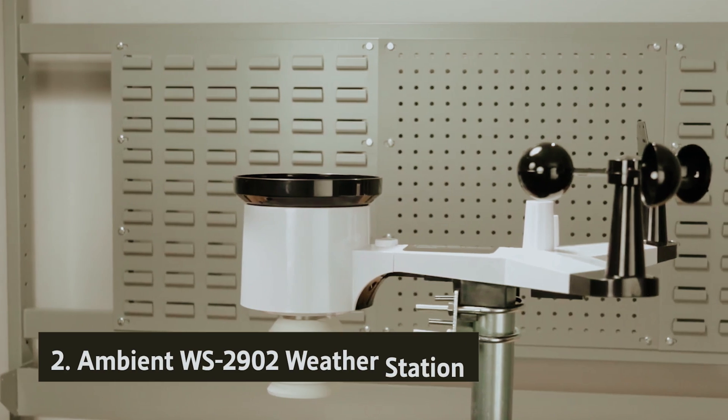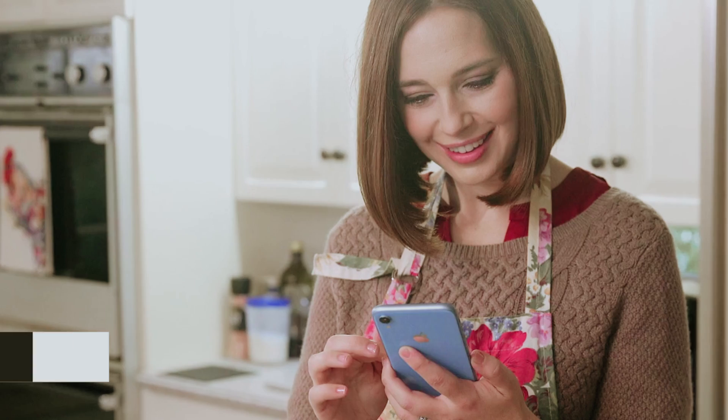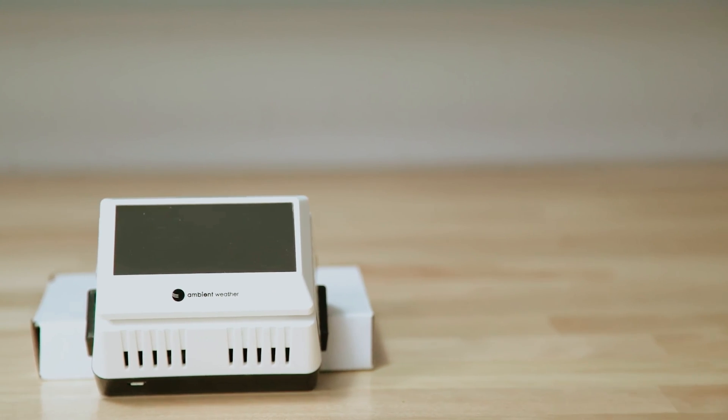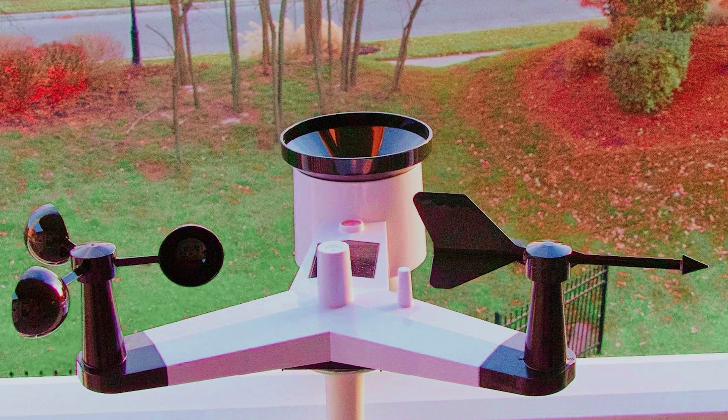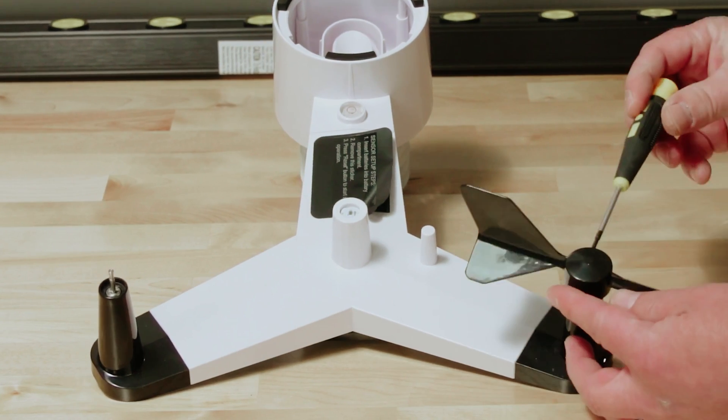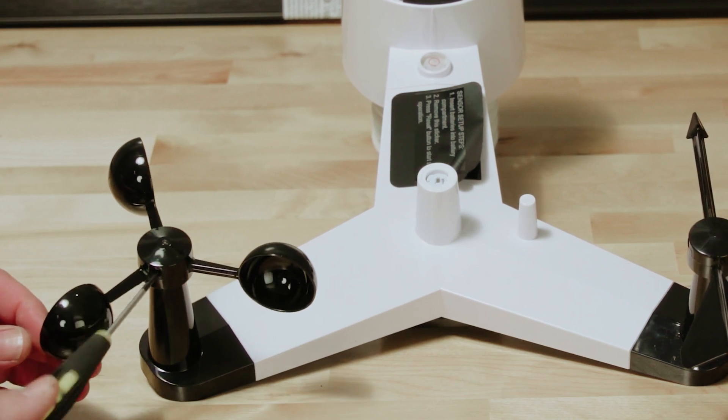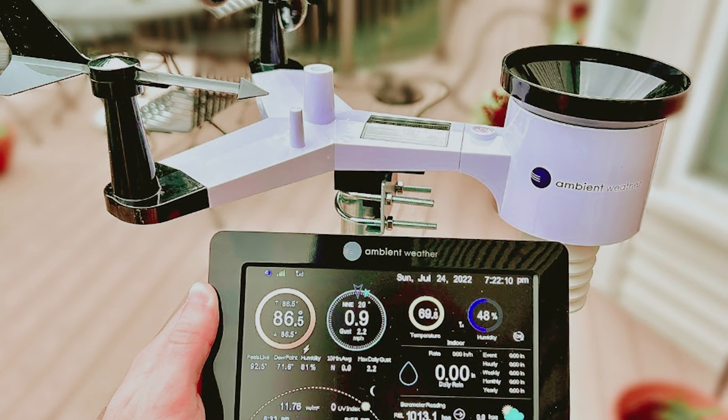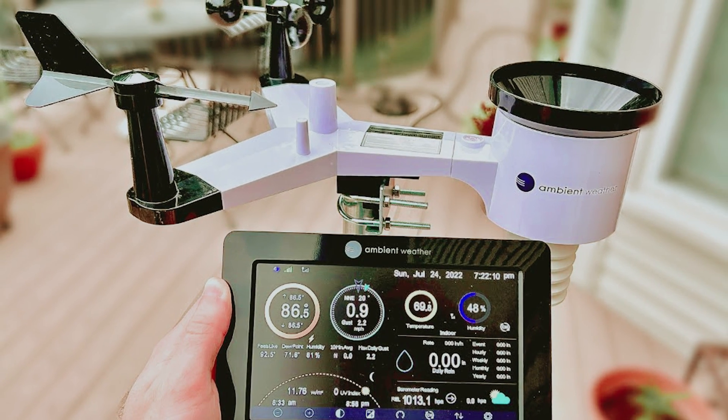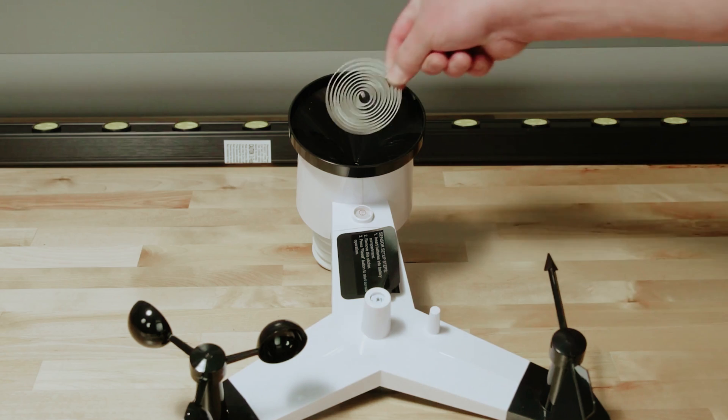At number two, Ambient WS2902 Weather Station. If you're looking for an exceptional weather station that balances quality with affordability, the Ambient Weather WS2902 deserves your attention. Now, in its fifth iteration, this model is designed with you in mind, featuring a streamlined in-app setup process that makes installation simpler than ever. You'll appreciate this upgrade as it allows you to get started quickly without any frustration. The console has also received a thoughtful redesign, offering improved visibility compared to earlier models. No longer will you need to position yourself directly in front of the display to read the data. The new console makes it easier for you to check the information you need from various angles.